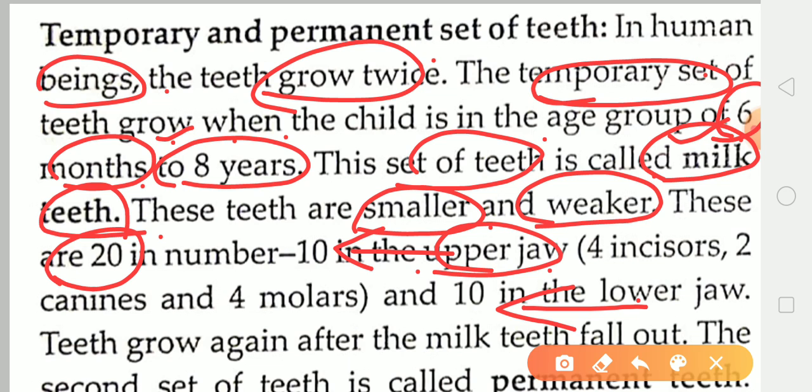These 20 teeth are of 4 types. As discussed in the previous session, the teeth are: Incisor, Canine, Premolar, and Molar.